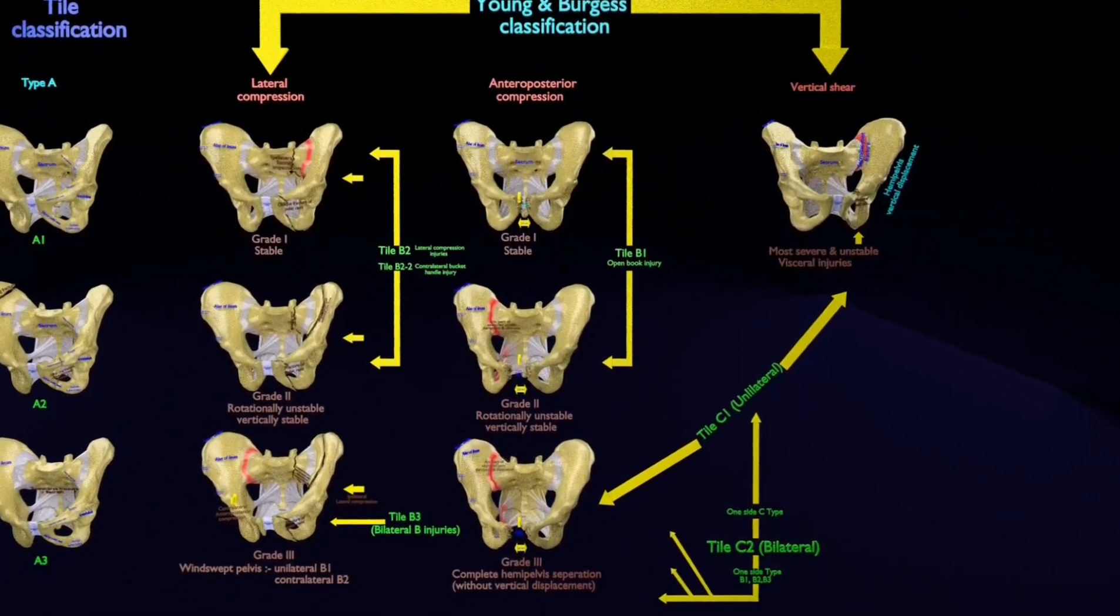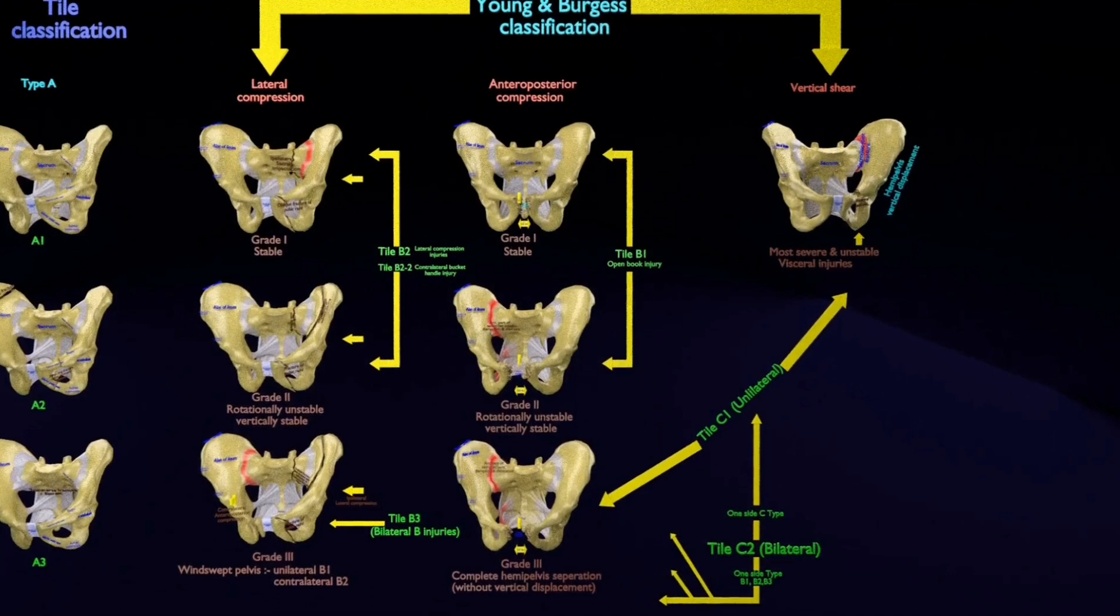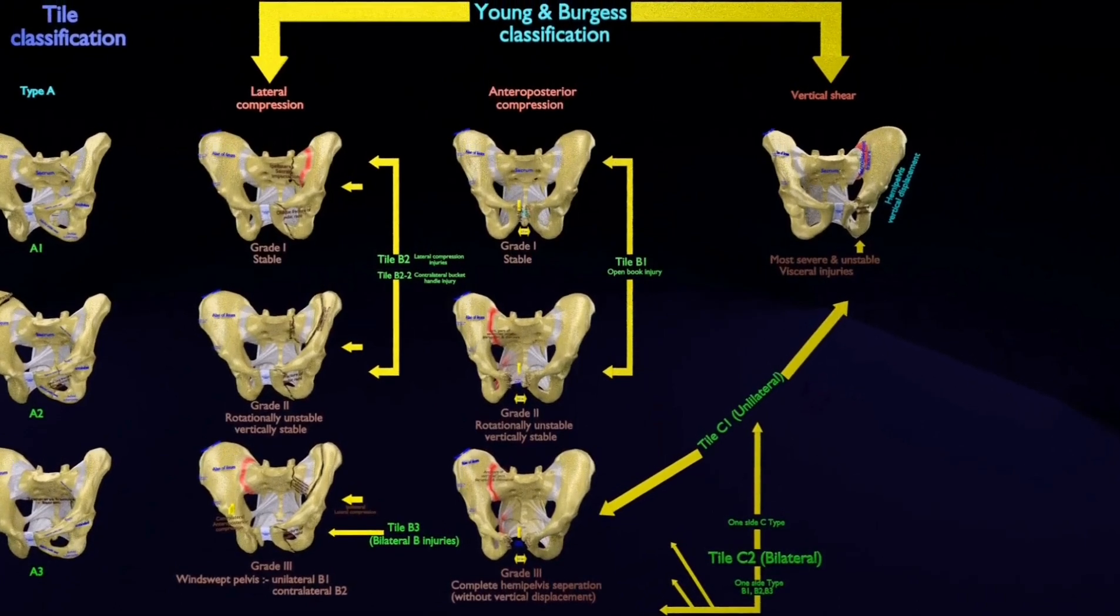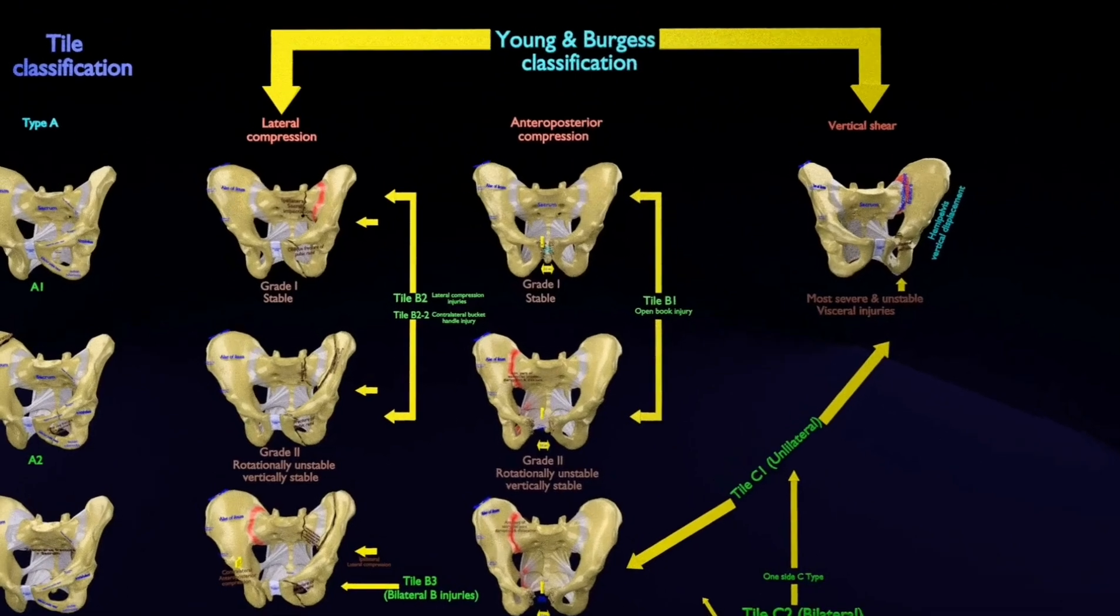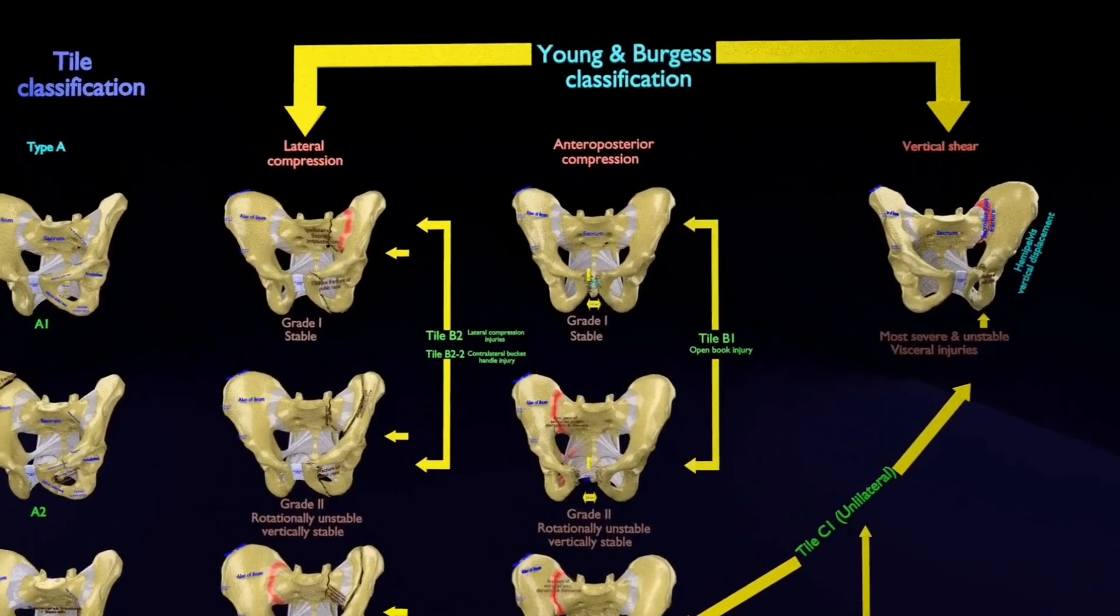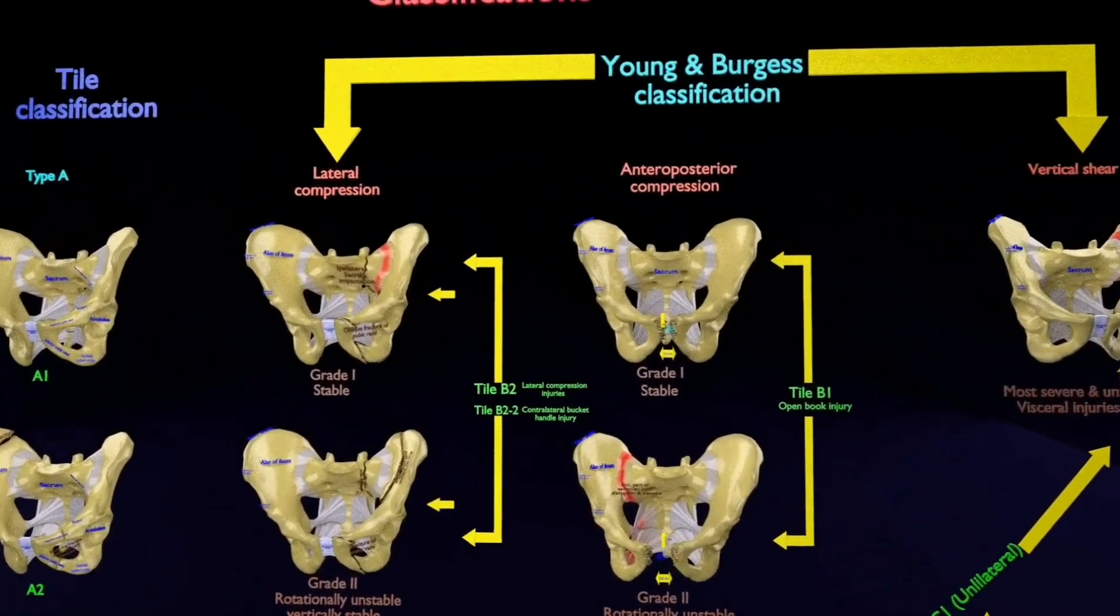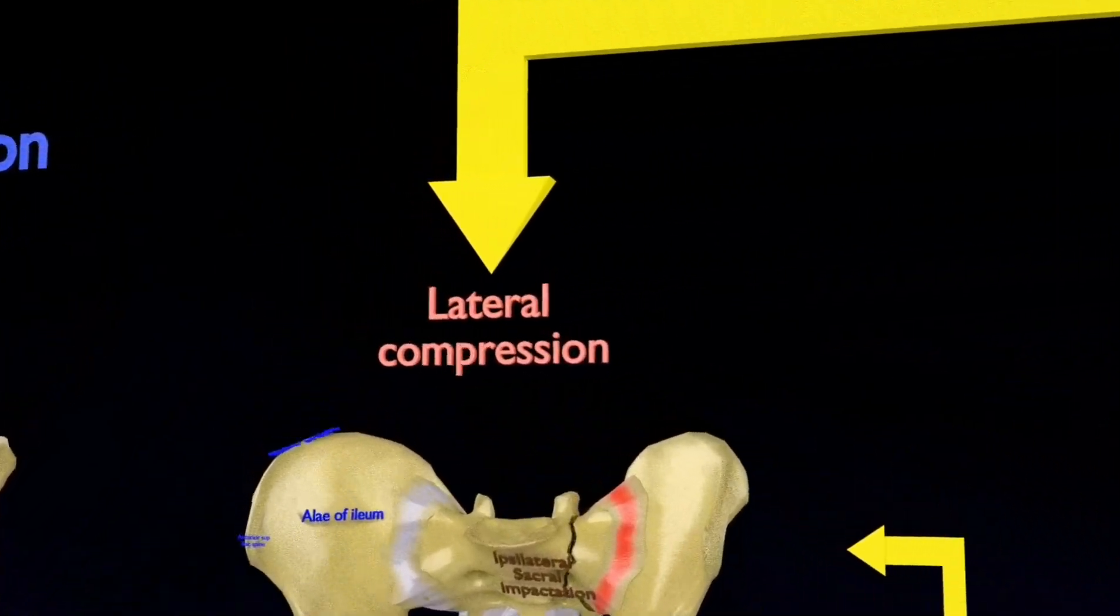Later on, I will explain Tile A classification, which is not included in the Young and Burgess classification, but categorized in the Tile classification as type A. Let's go on to look at the Young and Burgess classification.